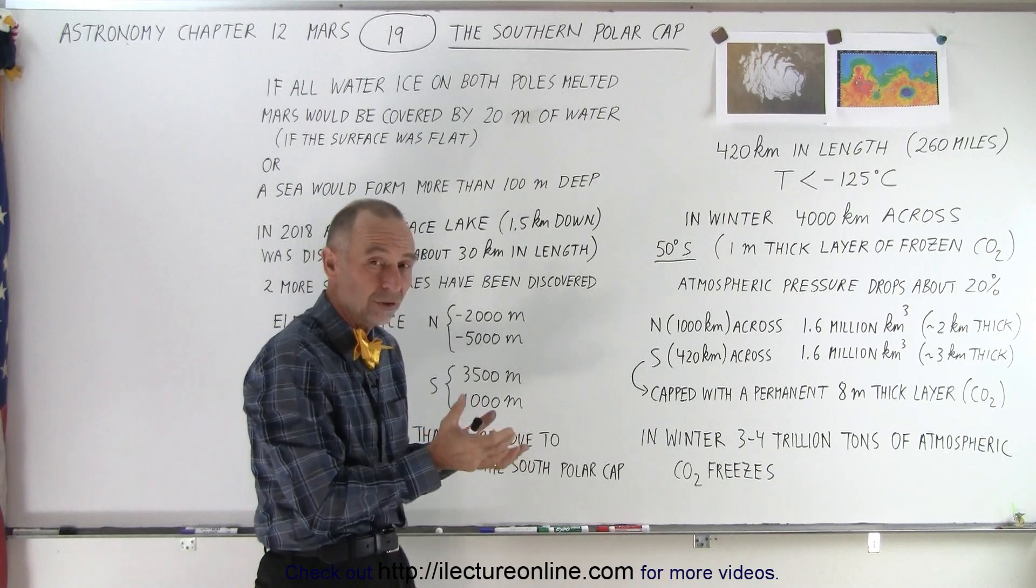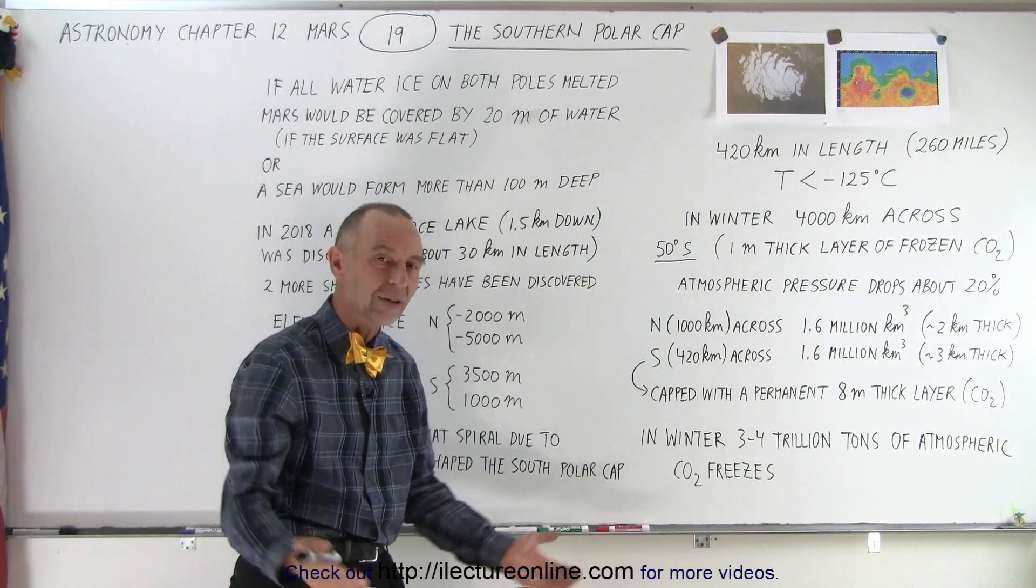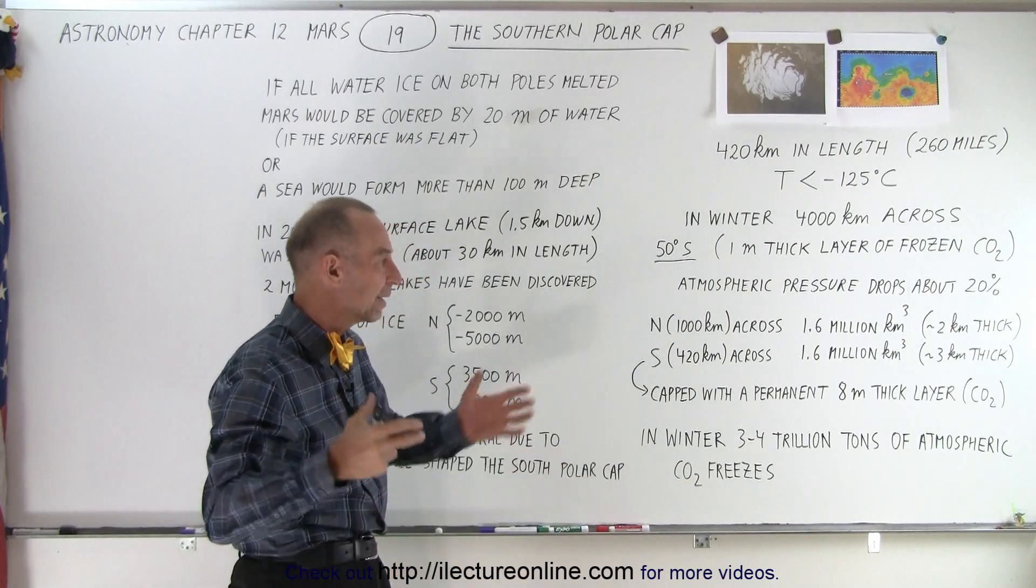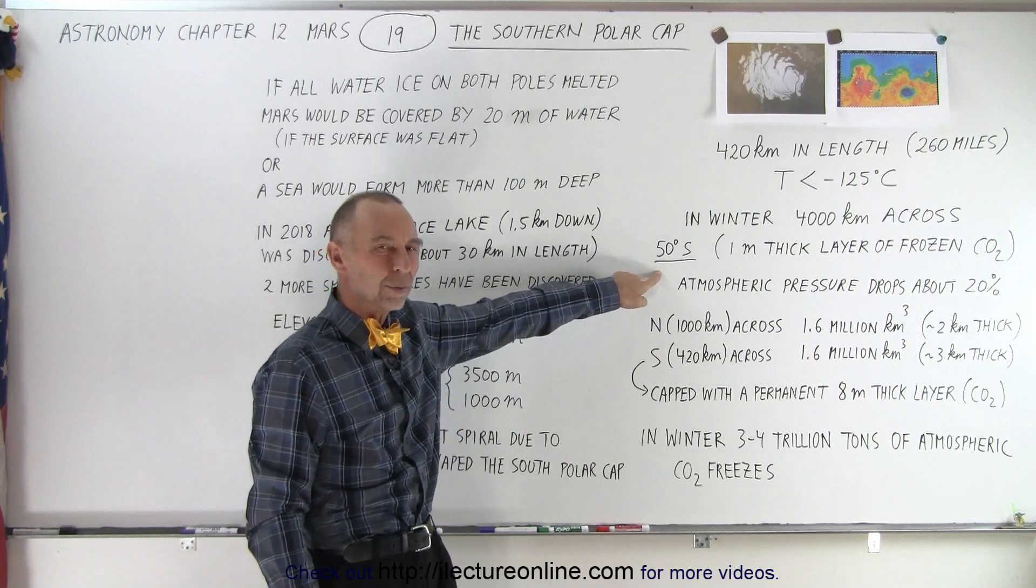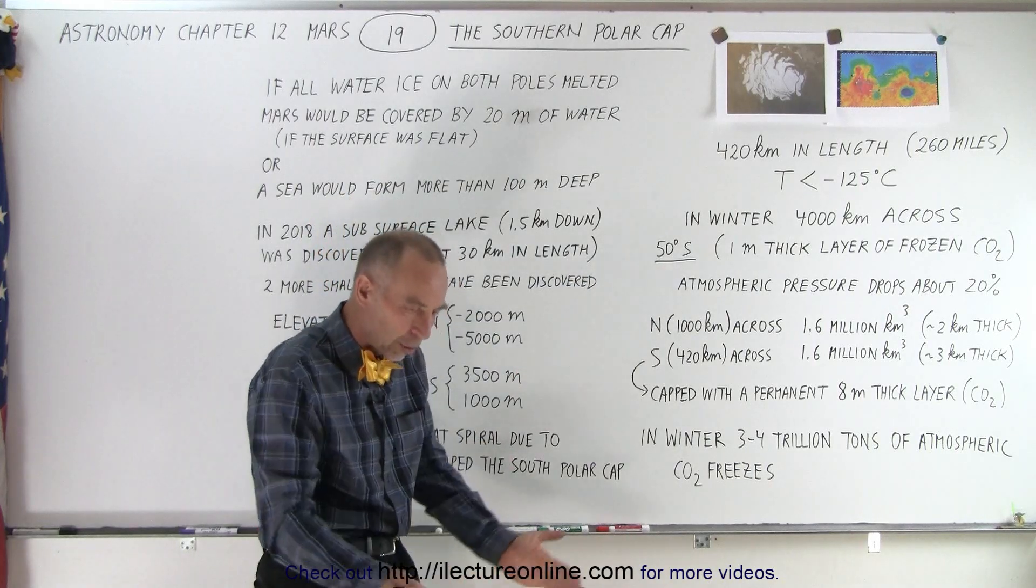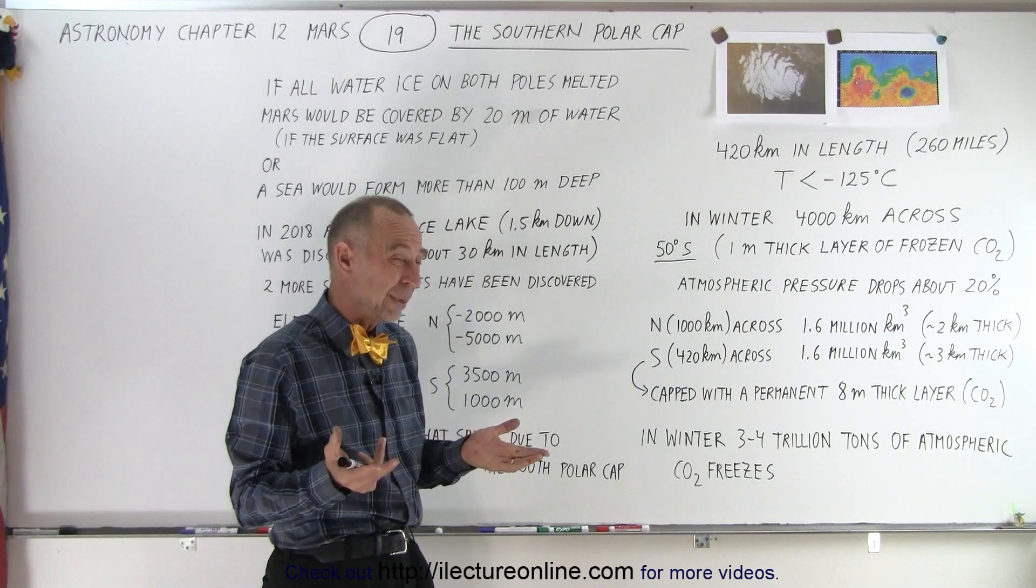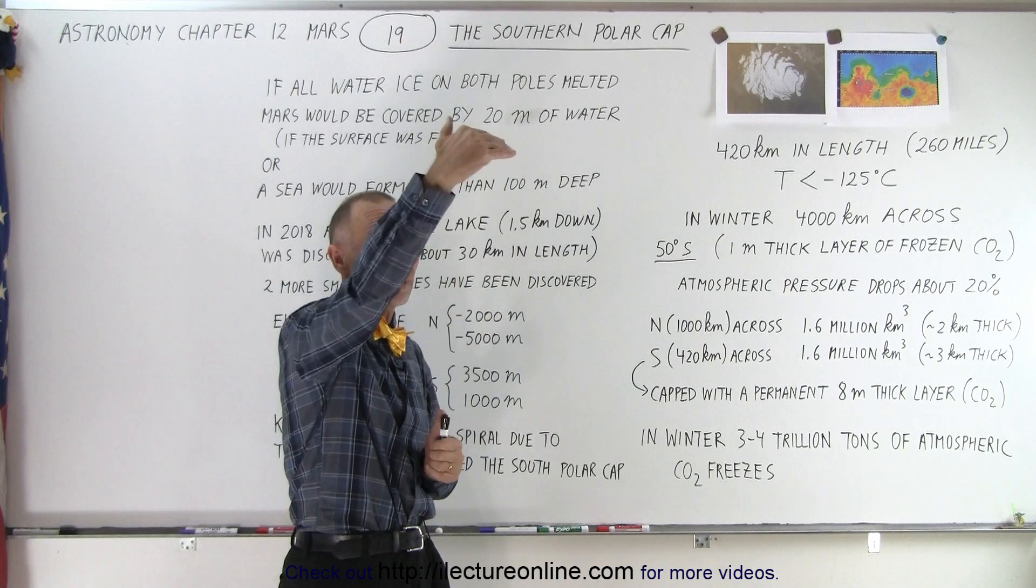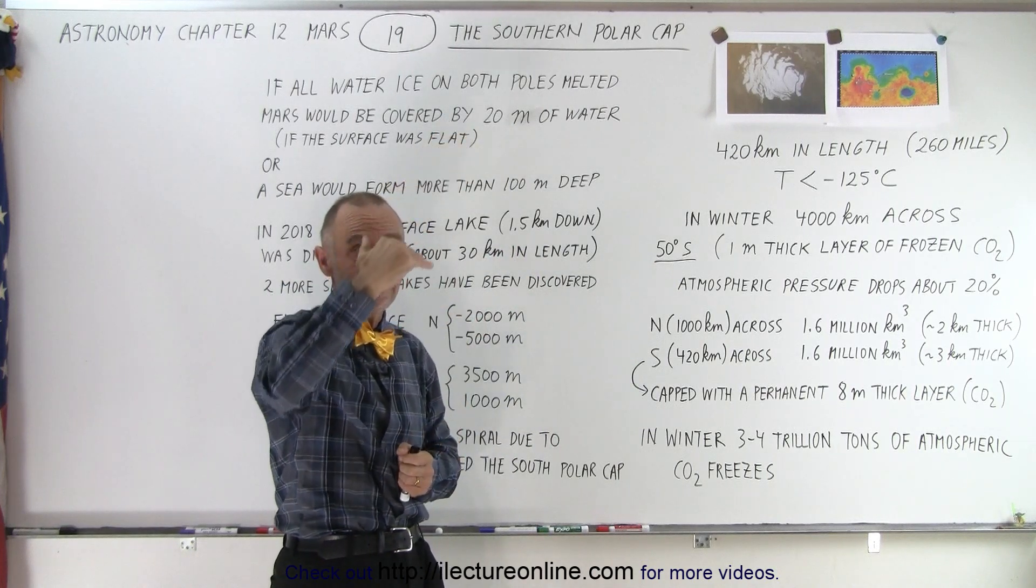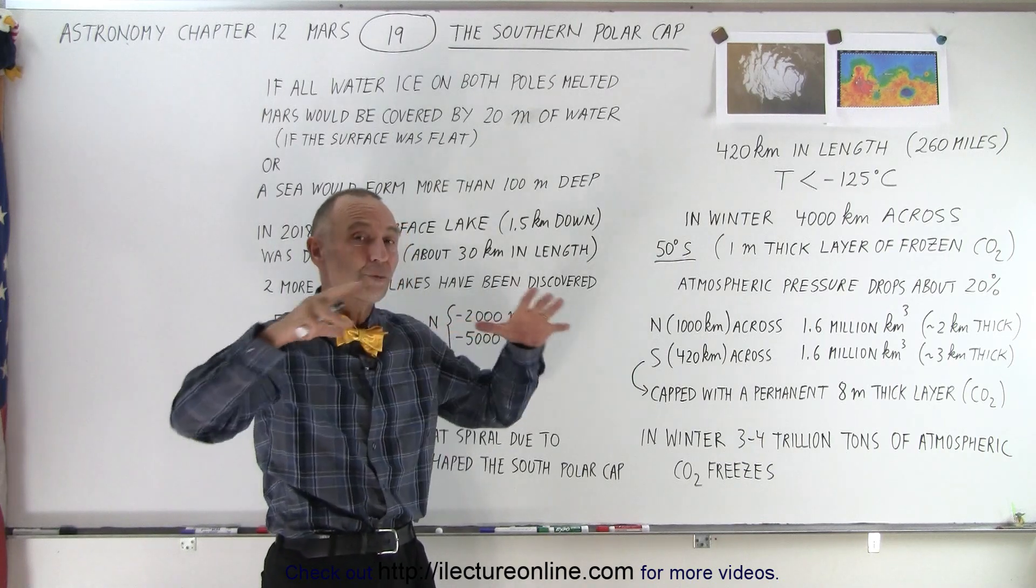Mars ends up being far away from the sun during the winter at the southern hemisphere, so the winters are very, very cold at the southern hemisphere and a lot of that carbon dioxide ice will then build up a meter thick all across to about 50 degrees south. Now that is from the south pole all the way to 50 degrees in latitude. And so when you think about that, well, on the earth at the northern polar cap if ice were to come all the way down to 50 degrees, that would be pretty well at the border of Canada and the United States.